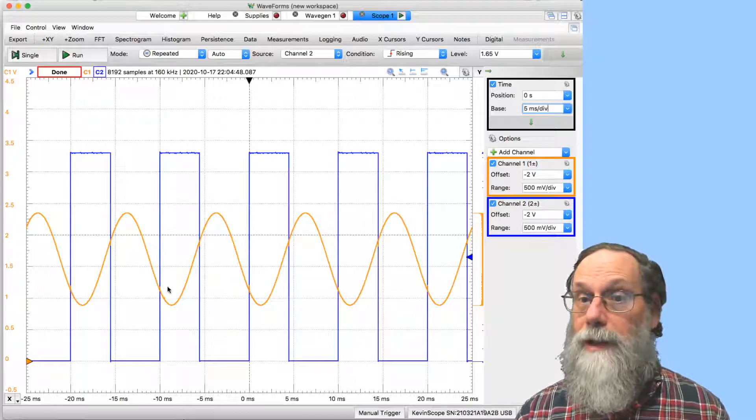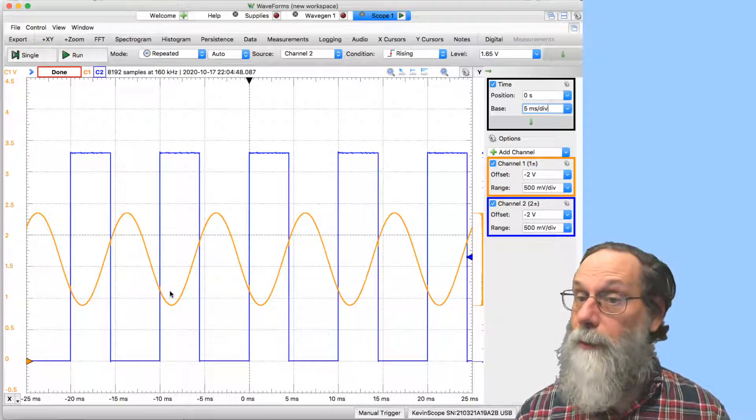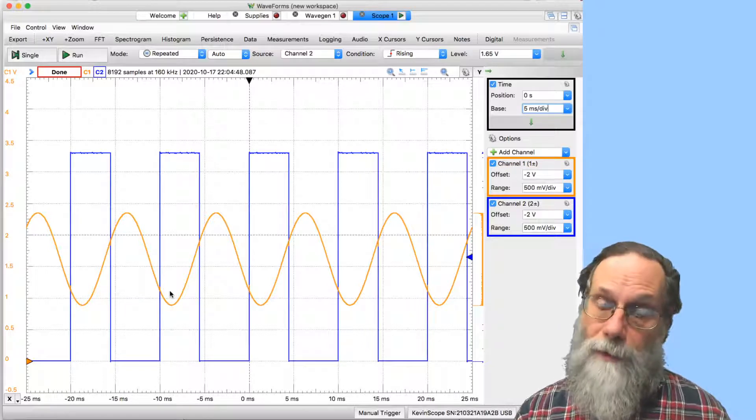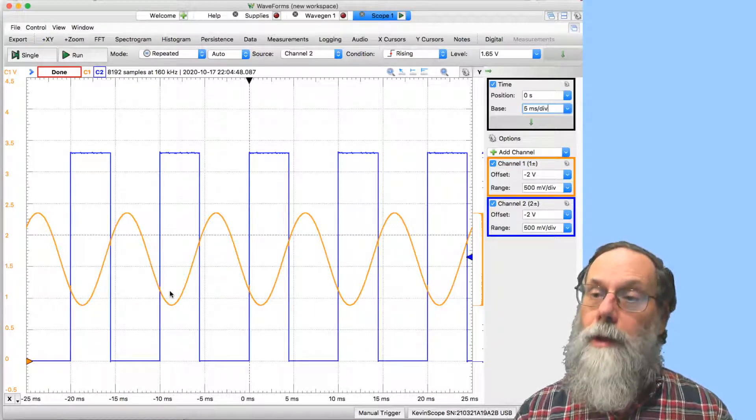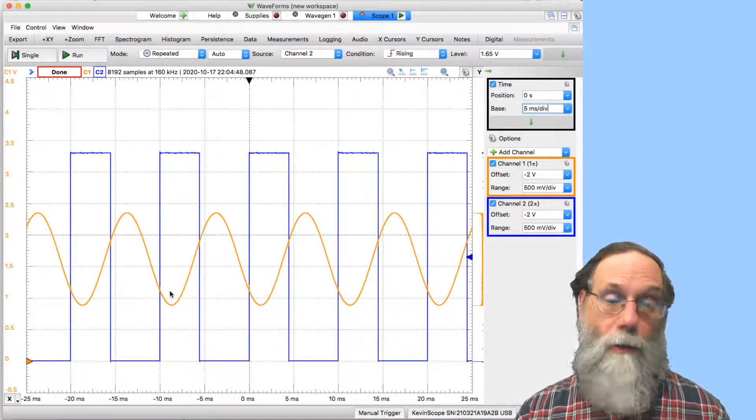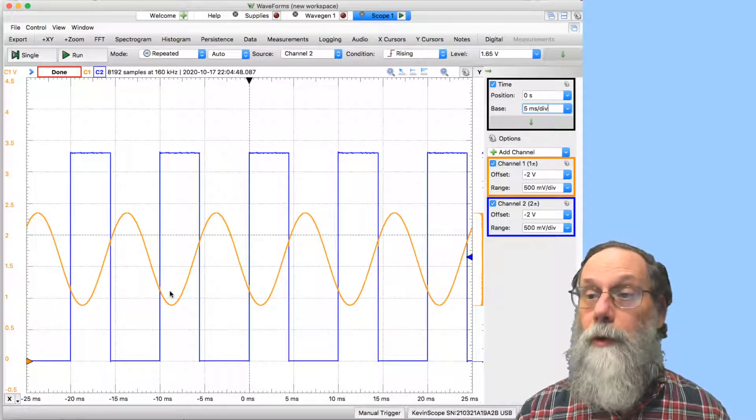The sine wave, as you can see, is not swinging from 0.15 to 3.15 because of that averaging with the second channel, which is at 1.65 volts with no noise added.